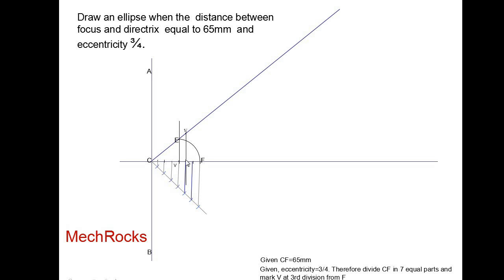Draw a vertical line and name it as 1, 1 dash. Take 1 to 1 dash as the radius, with F as center, and draw an arc above and below. You may take equal or unequal spacing from V to 1–1 dash and 1–1 dash to 2–2 dash.